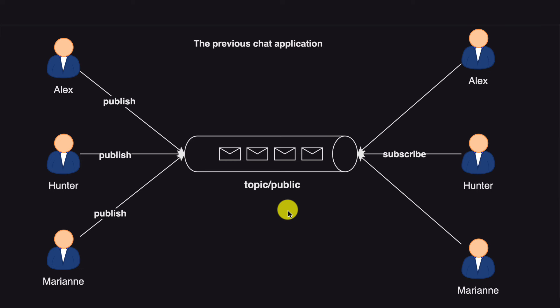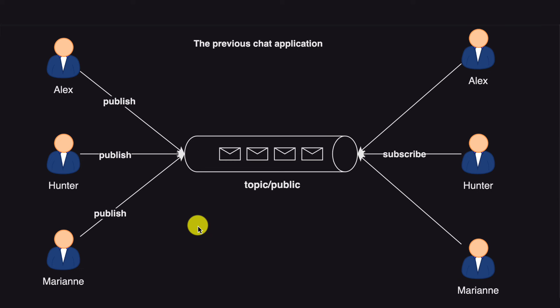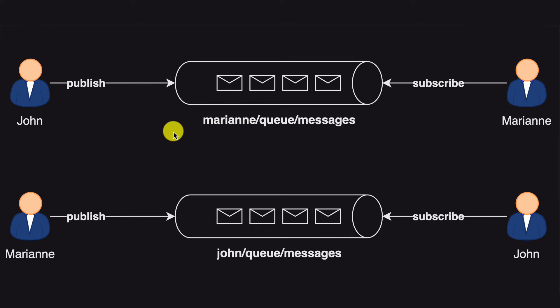Now we want to build something a bit more advanced and personalized — a one-to-one chat application. We want to have private communication between, for example, Alex and Hunter, or Hunter and Marianne. Let me explain how the queue and communication between this private chat will work. Let's take two users, John and Marianne, talking to each other.